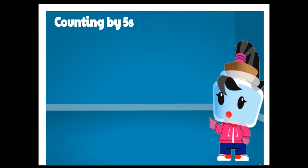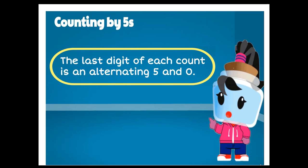Let's start with counting by 5. The trick here is the last digit of each count is an alternating 5 and 0.